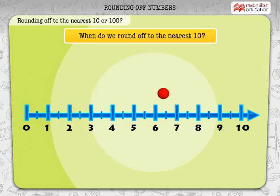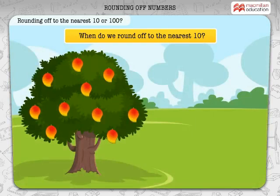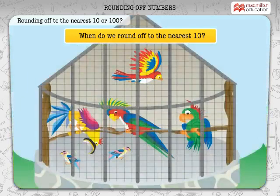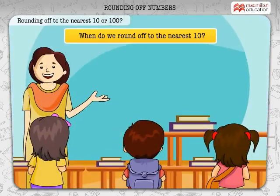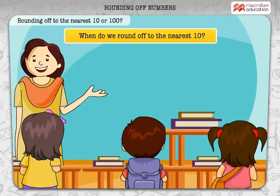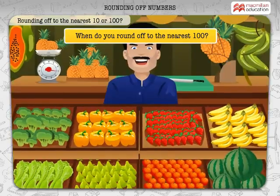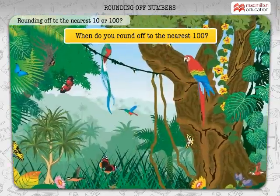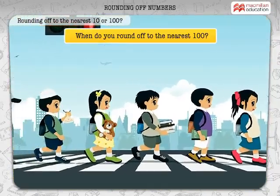When do we round off to the nearest 10? Take a look at these examples: the number of fruits in a tree, the number of birds in a cage, the number of students in a class. When do you round off to the nearest hundred? The number of fruits in a market, the number of birds in a forest, the number of students in a city.